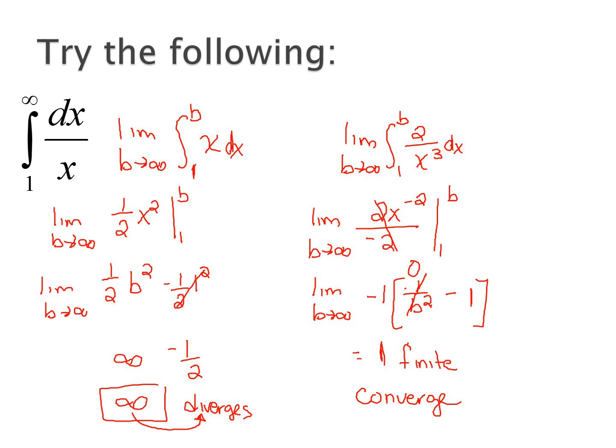Next example: the integral of dx/x from 1 to infinity. We set it up as the limit as b approaches infinity of the integral from 1 to b of x dx. Integrating gives 1/2 x², evaluated from 1 to b. Substituting, we get the limit as b approaches infinity of 1/2 b² − 1/2. As b goes to infinity, 1/2 b² goes to infinity, so we have infinity minus 1/2, which is still infinity. The answer is infinity, so this integral diverges.